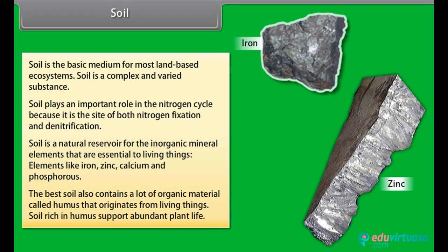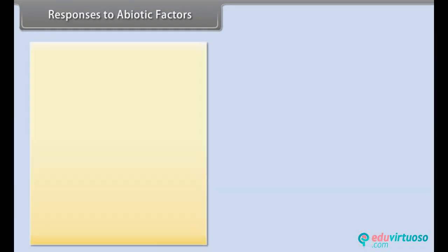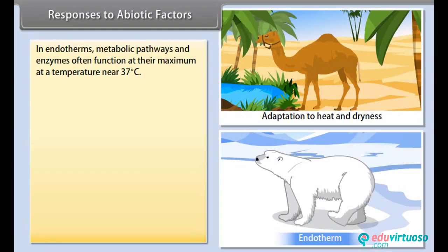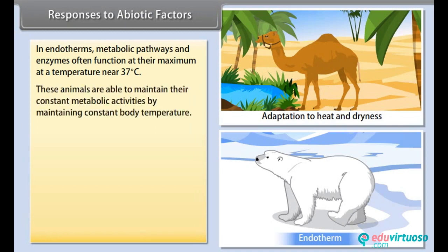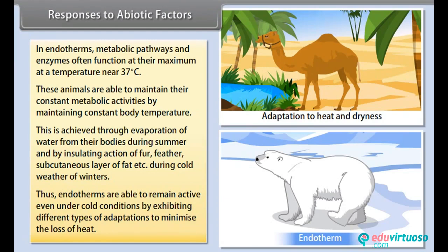Soil rich in humus supports abundant plant life. Responses to abiotic factors: The process by which organisms maintain a relatively constant internal environment under varying external conditions is called homeostasis. In endotherms, metabolic pathways and enzymes often function at their maximum at a temperature near 37 degrees Celsius. These animals maintain constant metabolic activities by maintaining constant body temperature. This is achieved through evaporation of water from their bodies during summer, and by the insulating action of fur, feather, and subcutaneous layer of fat during cold winters. Thus endotherms remain active even under cold conditions by exhibiting different types of adaptations to minimize the loss of heat.